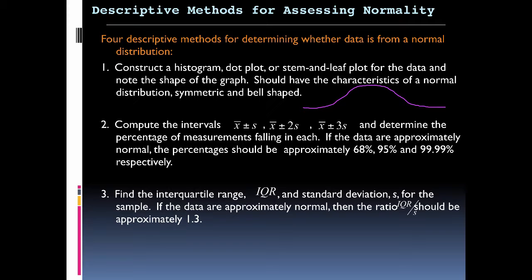Next, we're going to want to compute the intervals x-bar plus or minus s, plus or minus 2s, and 3s—those being the standard deviations. We're looking for somewhere around 68%, 95%, and 99.7% for those to be computed. Then we want to find the interquartile range, the IQR, and see how many standard deviations those are.